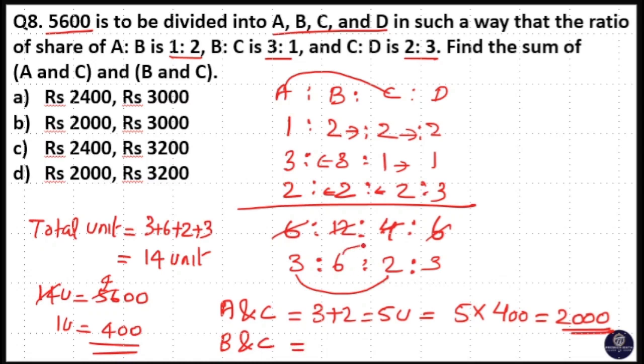B and C is equal to 6+2, that is 8 units. 8 units equals 8×400 = 3200 rupees. So here, 2000 and 3200 rupees - that is option D, your answer.